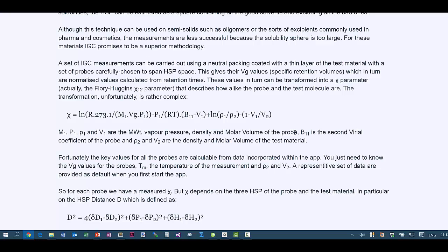These values are all known for the standard probes, and in fact, in the app, all those are available behind the scenes. You also need to know the density and molar volume of the test material. So, you measure the retention time, you calculate VG, and then from this equation, you calculate chi. Right, but how does that help us measure HSP?